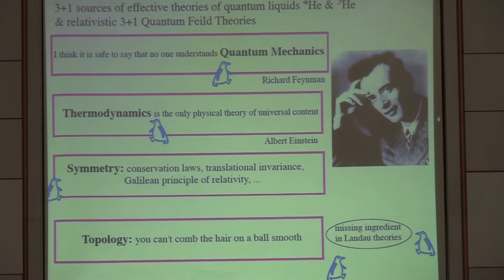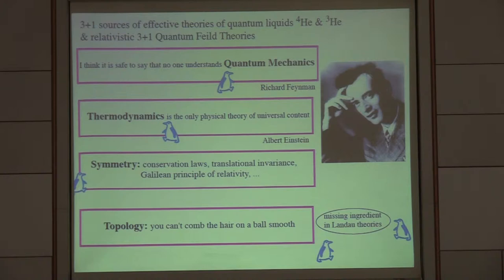The idea is to construct the effective field theory for our universe, for so-called quantum gravity, for quantum electrodynamics, and so on. At least we know how to do that in condensed matter. It was Landau who introduced two effective field theories. He used three concepts: quantum mechanics which nobody understands, thermodynamics which is the only theory of universal character, and symmetry. What was missing is topology.